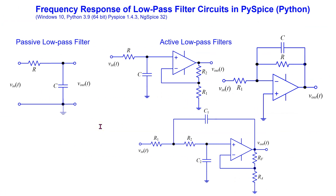Low-pass filter circuits are a basic building block in realizing other types of filters such as high-pass, band-pass, and band-stop filters. The Python codes to simulate the four different low-pass filters discussed in this video are available in the video description and in the comments section below. Thank you for watching this video. If you have any suggestions for video topics, please post them in the comments section.